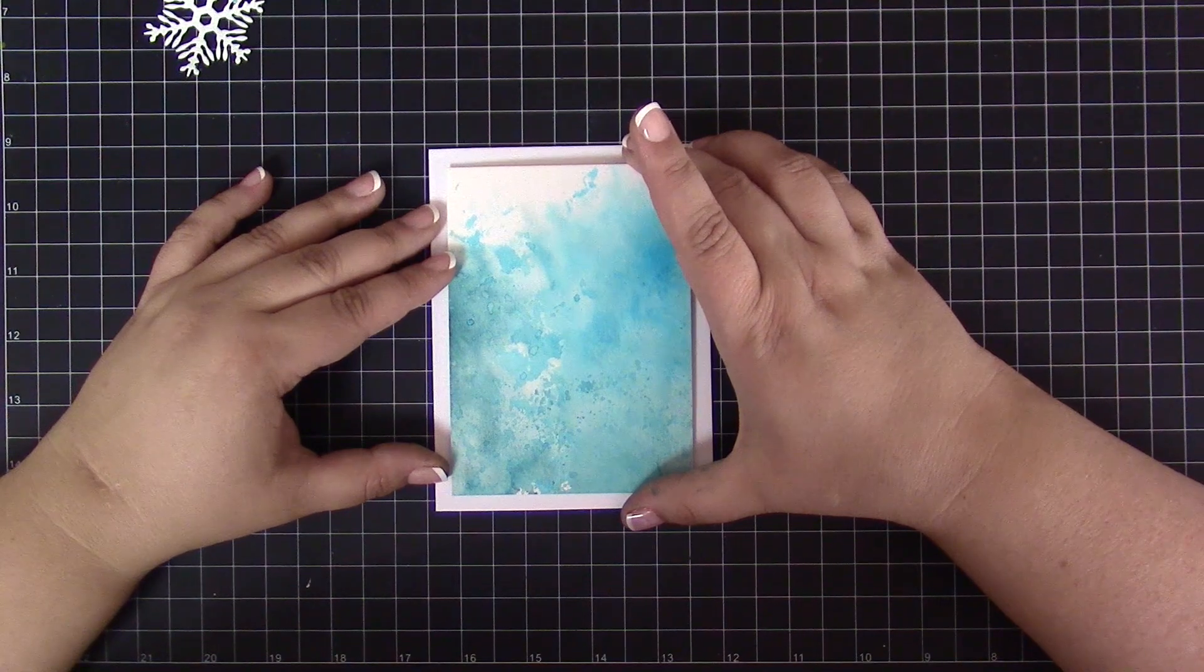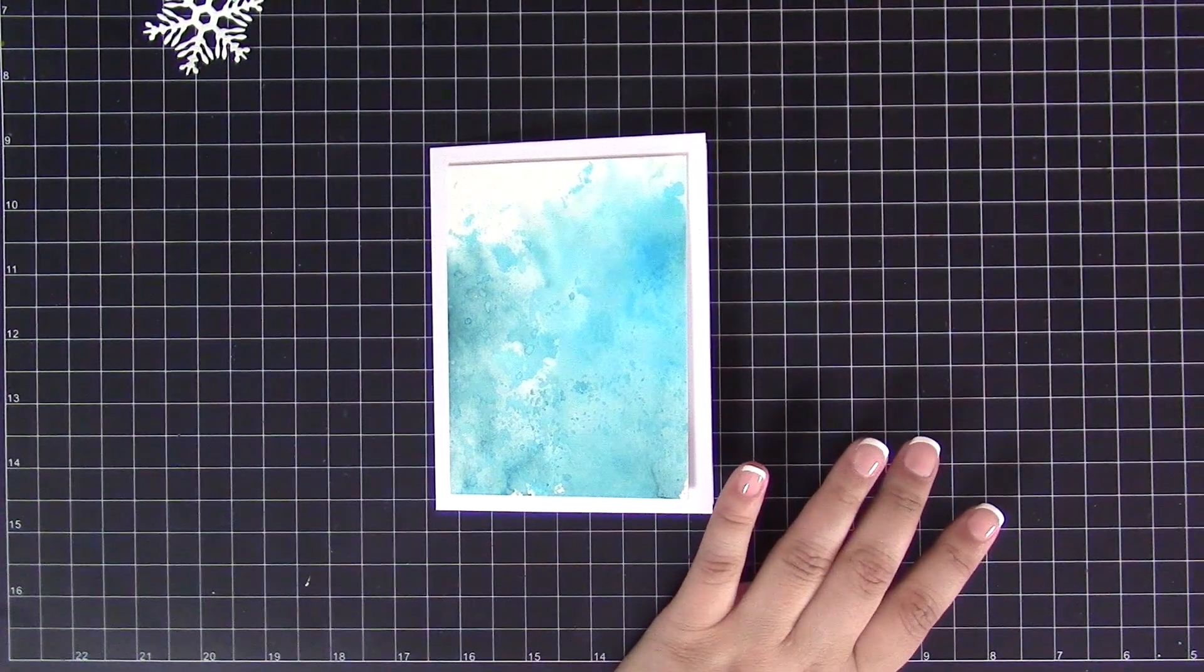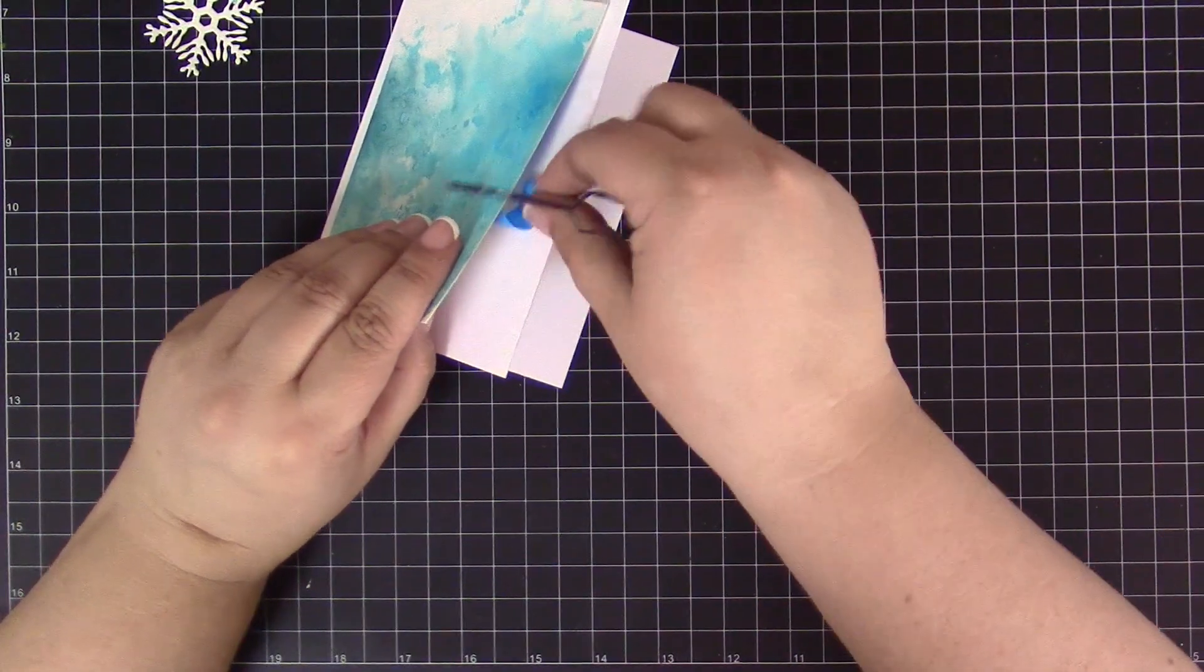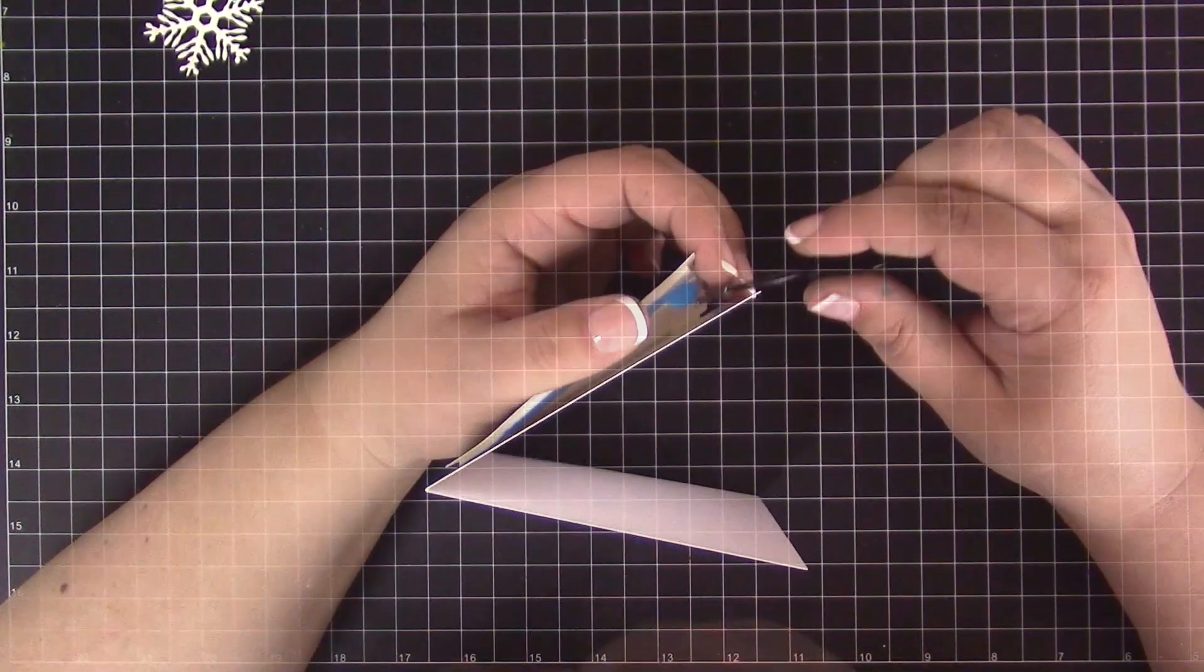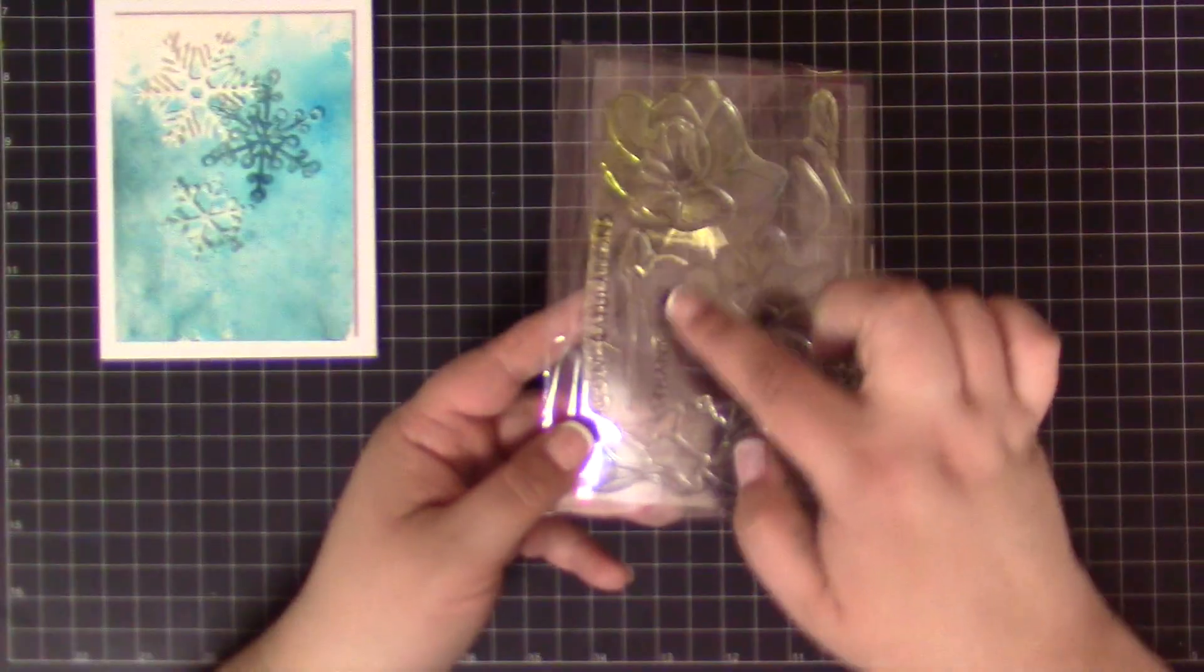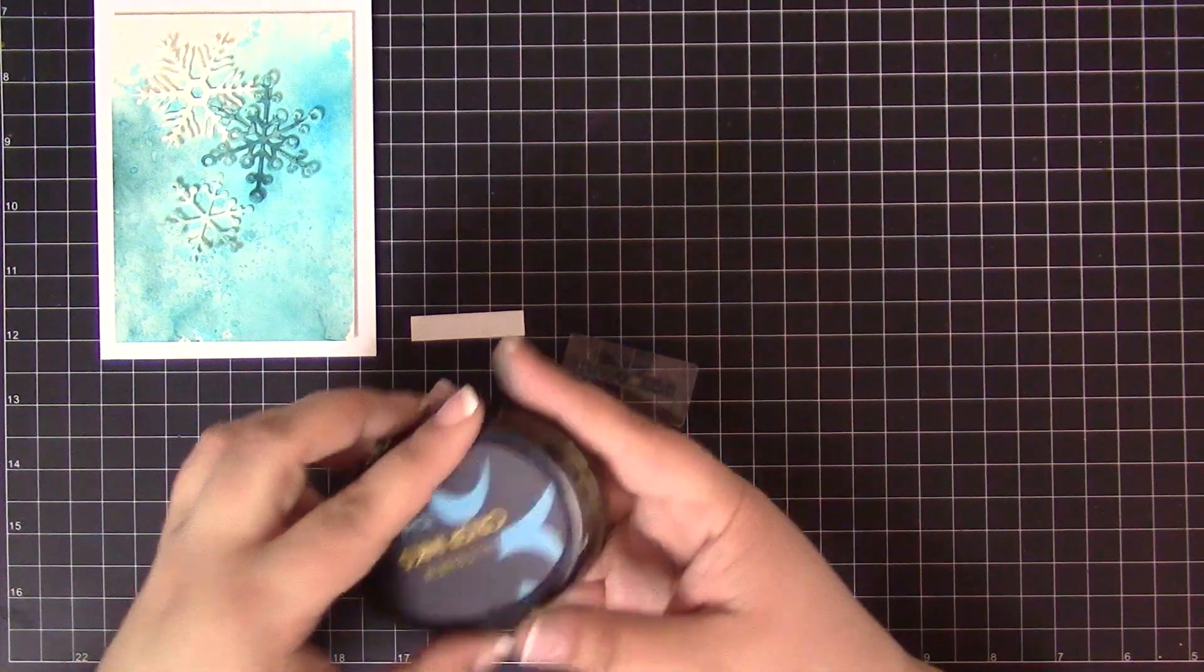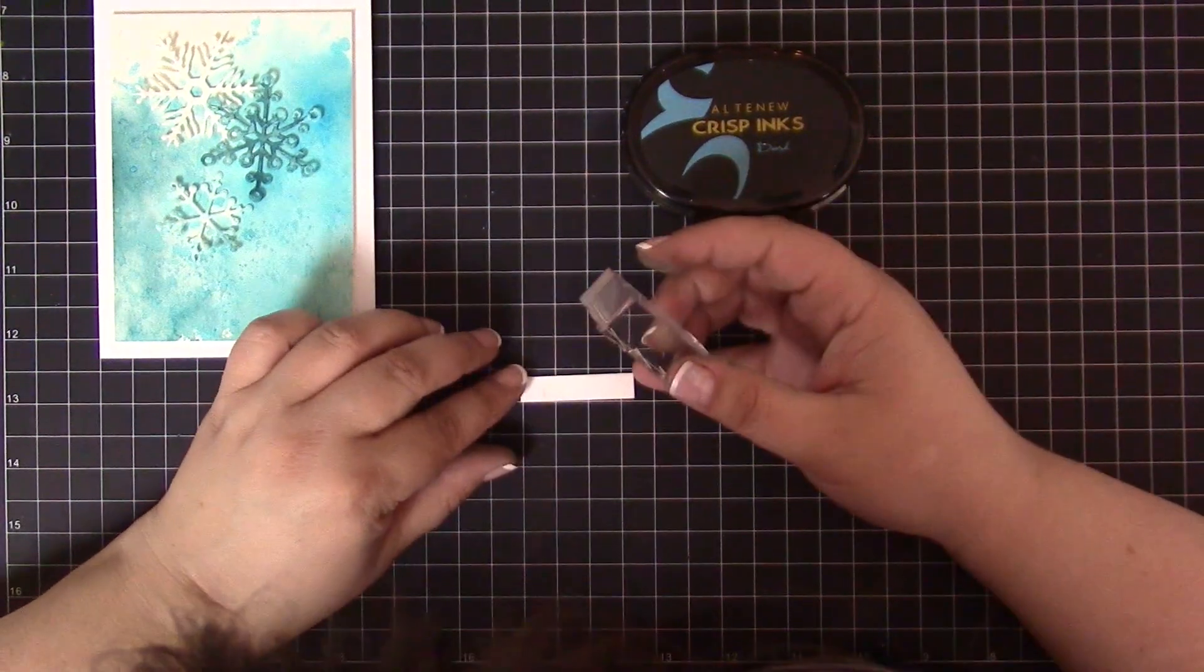I'm adhering the panel onto the card base, and once I'm happy with its position and ready to commit to it, I'm removing the backing from the rest of the tape using my trusty craft tweezers with precision tip and reverse grip. The last element I have to make for this card is a sentiment. I will be using the Thank You stamp from the Magnolias for Her stamp set. I'm stamping it onto a white cardstock stripe using the Dusk ink.